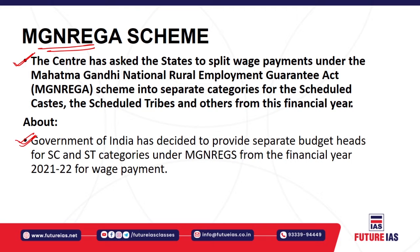Another aim of MGNREGA is to create durable assets like roads, canals, ponds, and wells in rural areas. Employment is provided within five kilometers of the worker's residence. If work is not provided within 15 days, the applicant is entitled to receive unemployment allowances under MGNREGA. MGNREGA-related works are implemented mostly by Gram Panchayats.